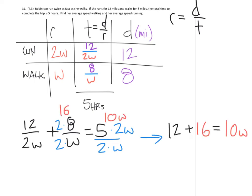So that gives us 12 plus 16 equals 10W. You can see that 2 times 8 would give us the 16, and 5 times 2W, or 5 sets of 2Ws, would give us 10Ws right here. Now, we'll just combine the 12 and 16, which gives us 28. That equals 10W, and then we'll just divide both sides by 10. That tells us the walking rate is 2.8.